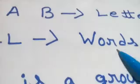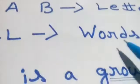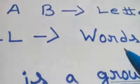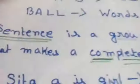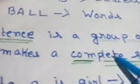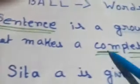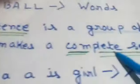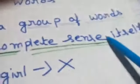So when we join the words or arrange the words, we get a sentence. For example, what is the definition of the sentence? A sentence is a group of words that makes a complete sense itself.